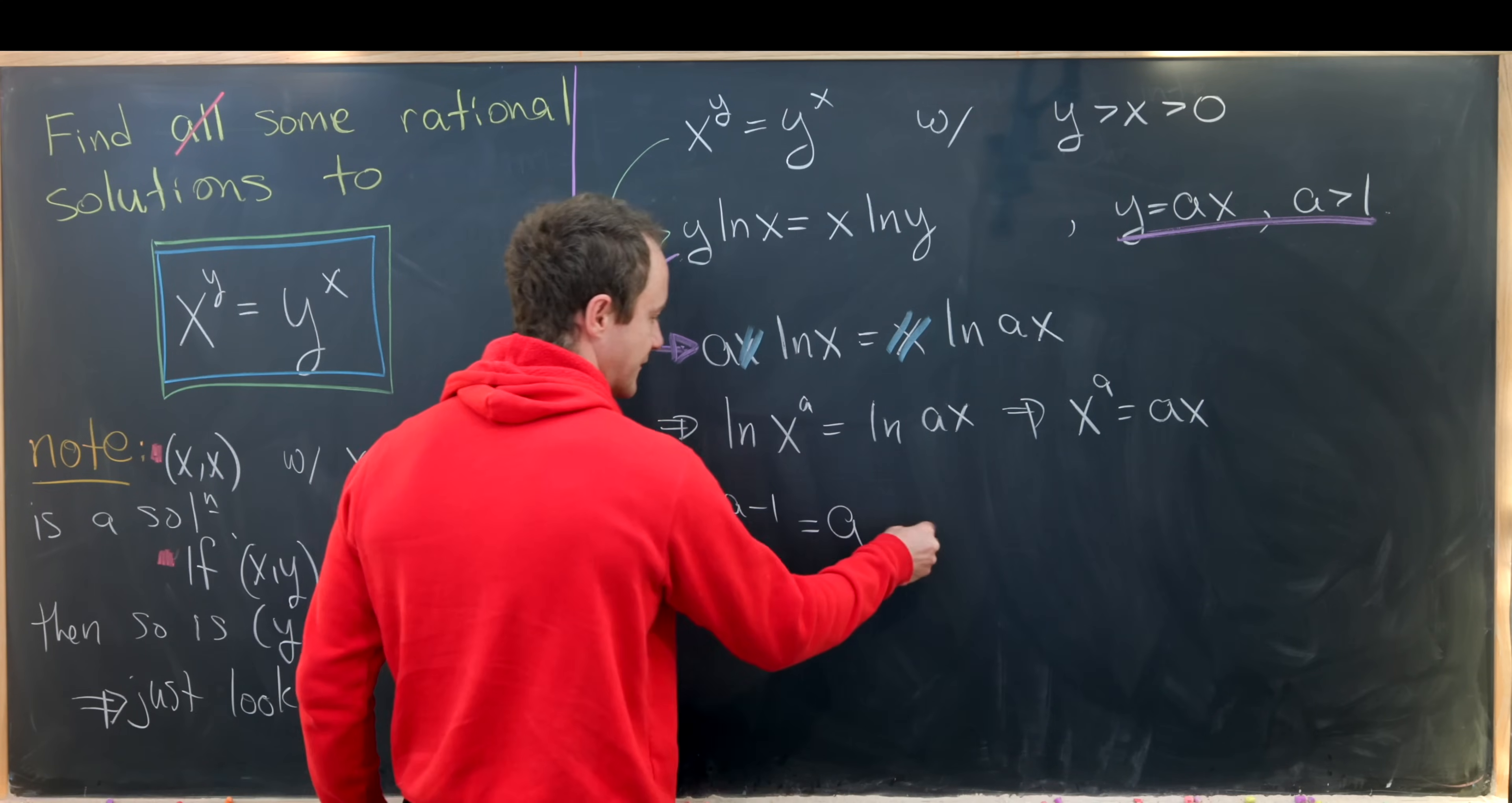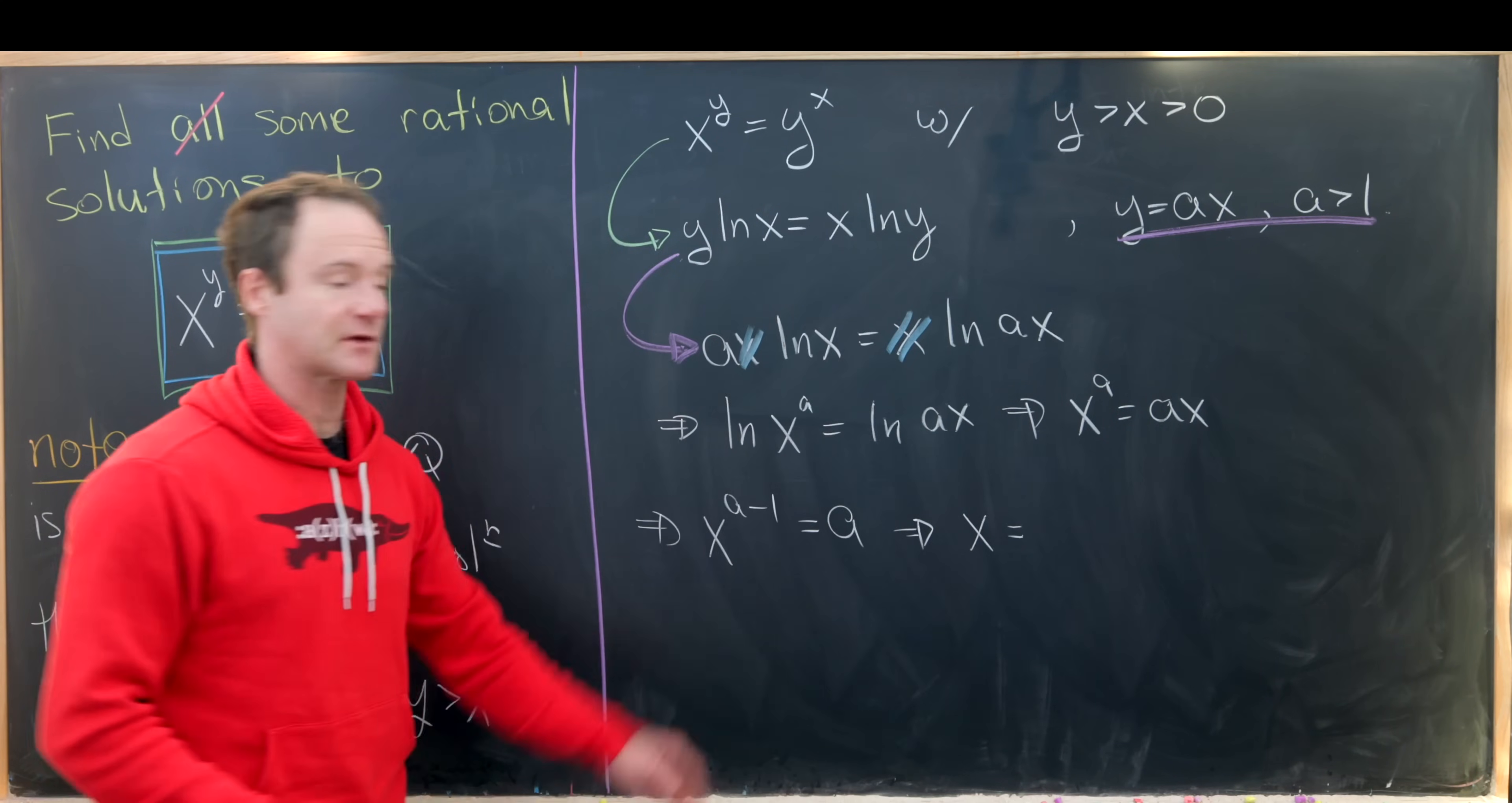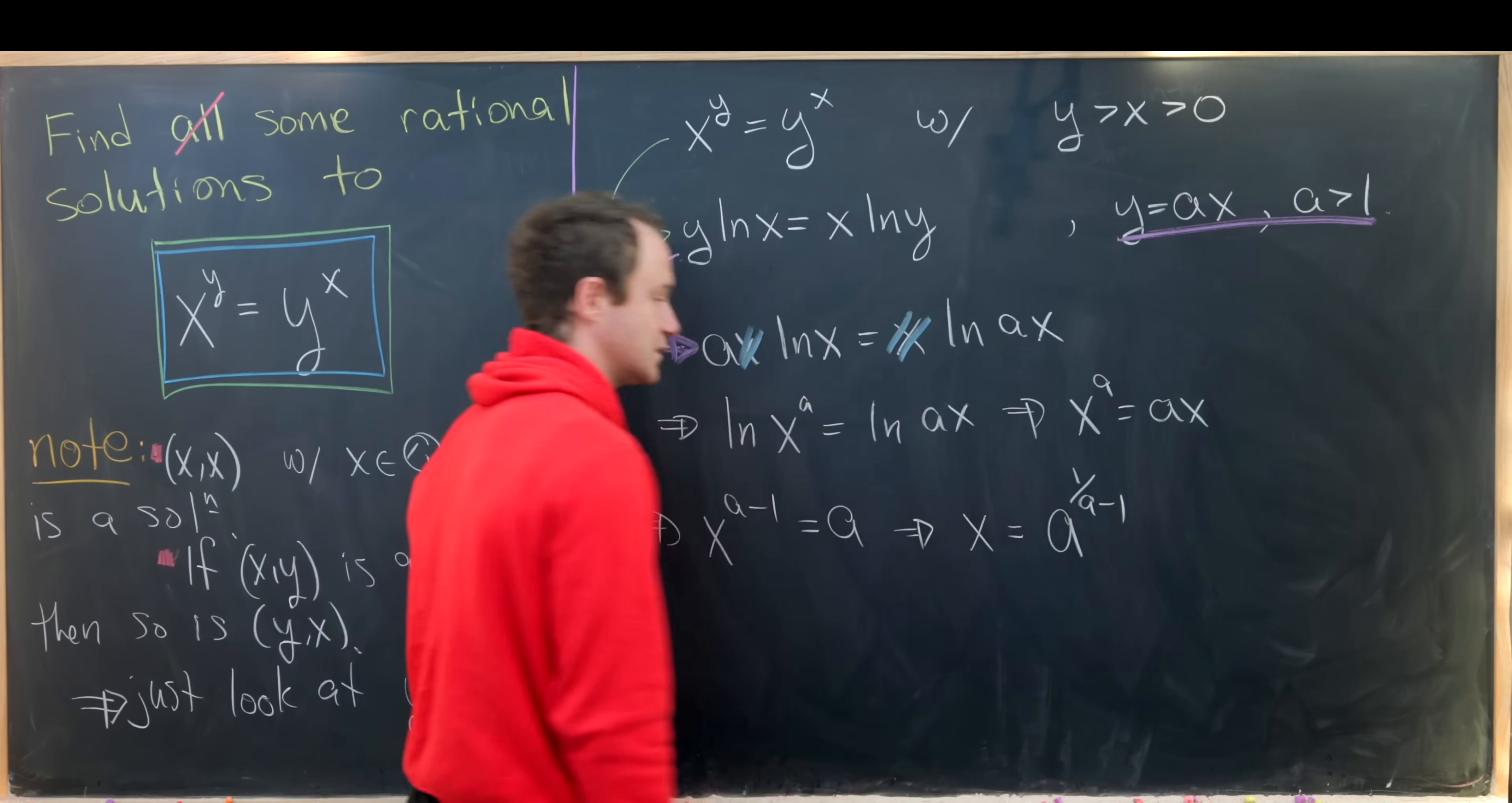But that means we've got a value for x. So notice that x is the a minus first root of a, or in other words, it's a to the one over a minus one.